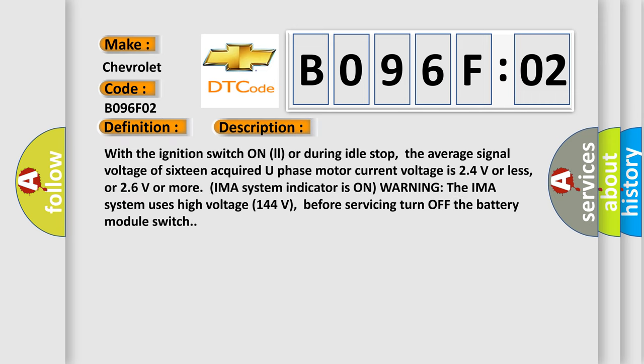With the ignition switch on all or during idle stop, the average signal voltage of 16 acquired U-phase motor current voltage is 24 volts or less, or 26 volts or more. IMA system indicator is on warning. The IMA system uses high voltage 144 volts; before servicing, turn off the battery module switch.